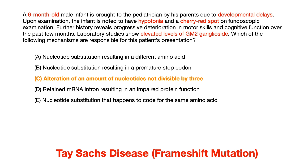What we're talking about in this practice question is Tay-Sachs disease. The vignette describes Tay-Sachs disease as shown in all of the things highlighted in red: a 6-month-old male with developmental delays, symptoms including hypotonia, and the big buzzword — cherry red spot on fundoscopic exam. And elevated levels of GM2 ganglioside. This is a challenging third-order question, and Tay-Sachs disease is described almost textbook in this vignette.